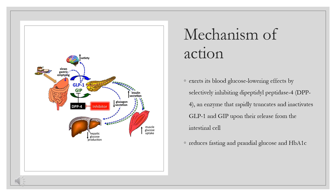DPP-4 inhibitors block the cleavage of incretins and thus lead to an increased insulin level and a reduced glucagon level in a glucose-dependent way. This results in a decrease of fasting and postprandial glycemia, as well as HbA1c levels.